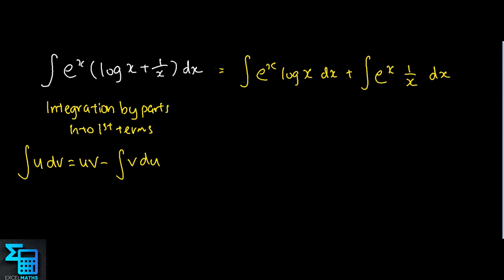Alright, so for the first term, we need to identify which is u and dv. In this case, u is log x, so we have u equals log x and du is 1/x.